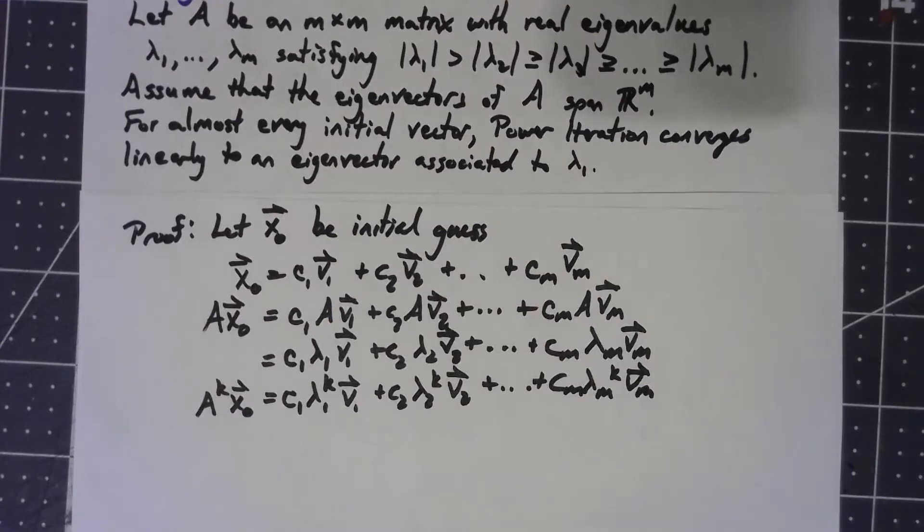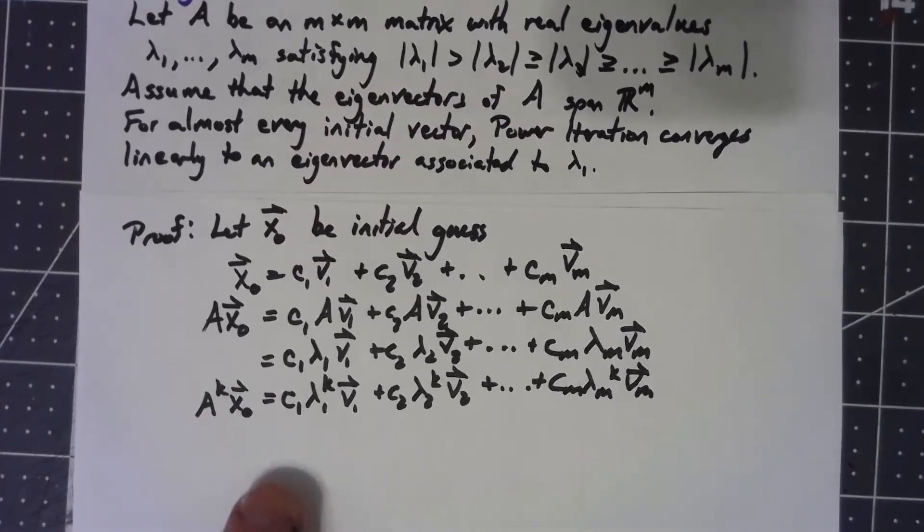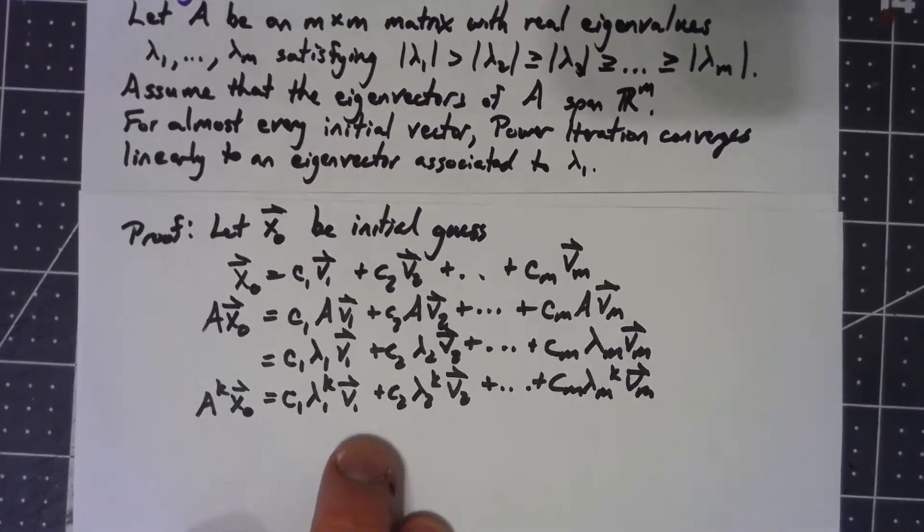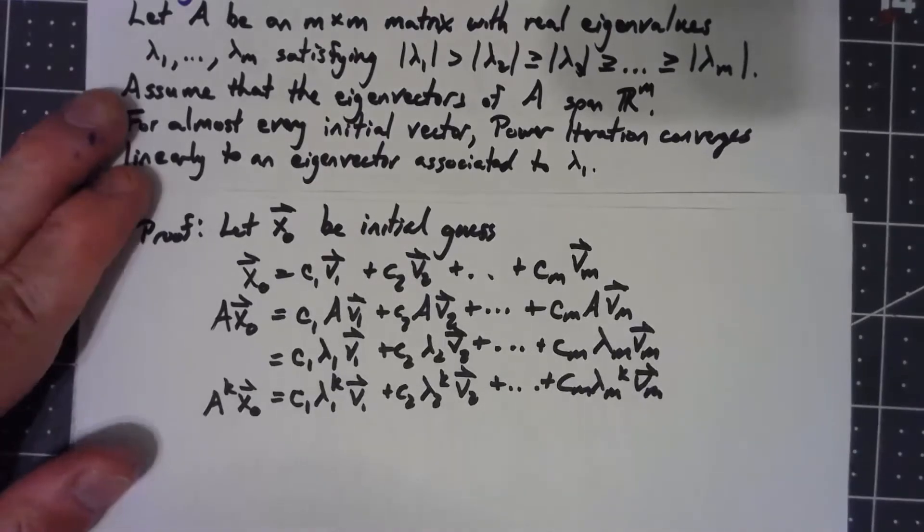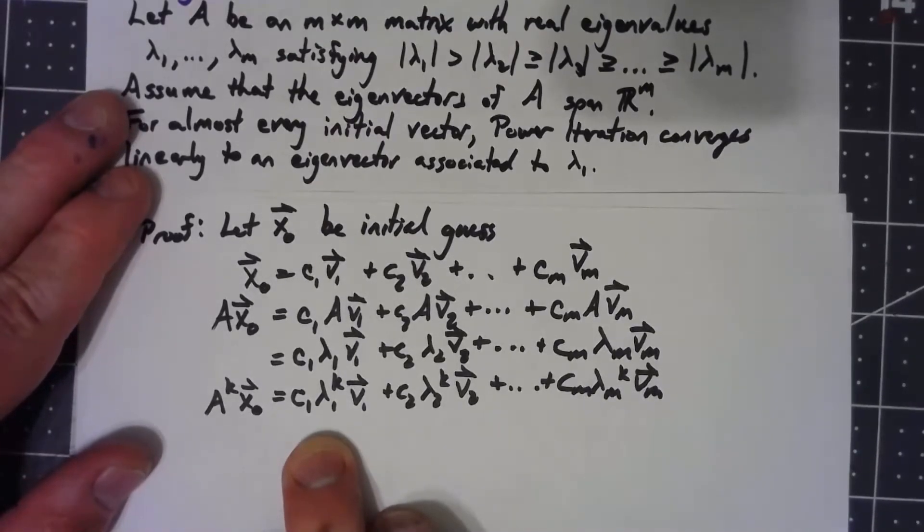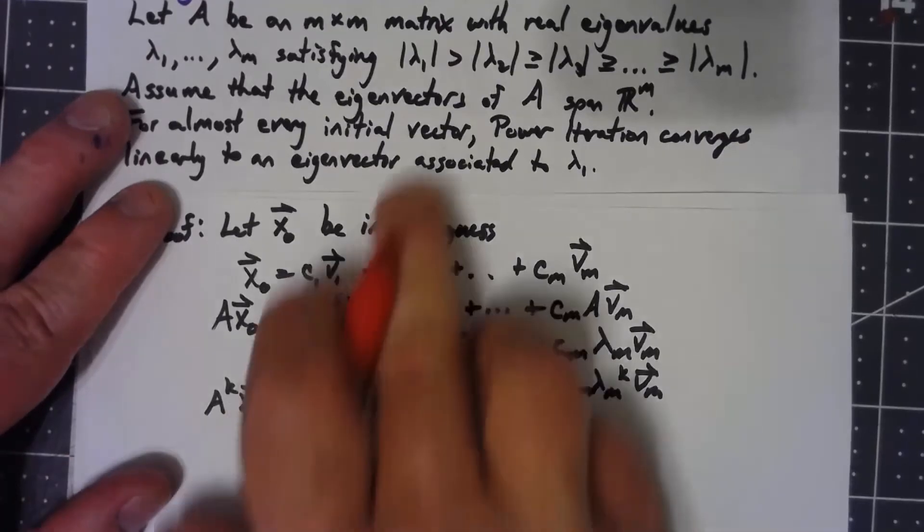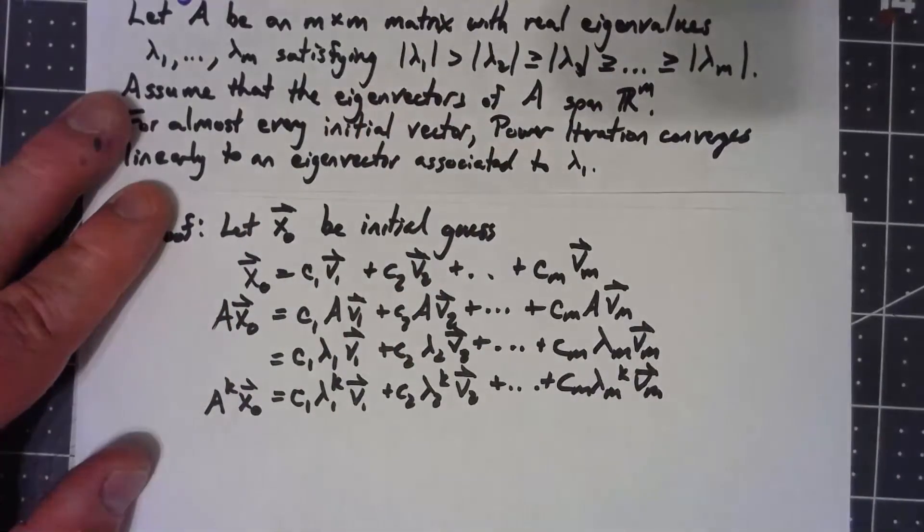We know that in the power iteration process we normalize the vector, so it doesn't matter what constant I divide by; I'm getting the same convergence. Let's divide everything by lambda_1 to the k. We know lambda_1 can't be zero because it's strictly bigger than the other eigenvalues.